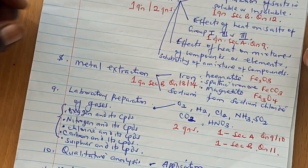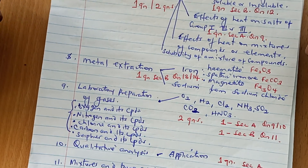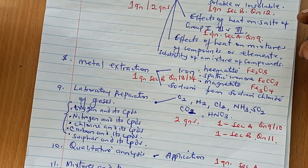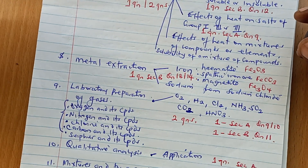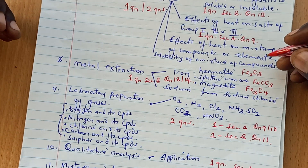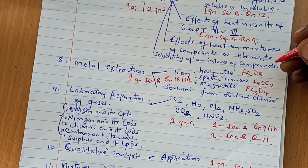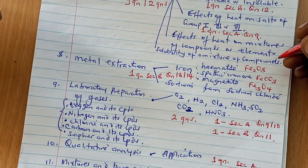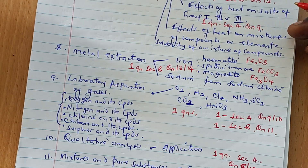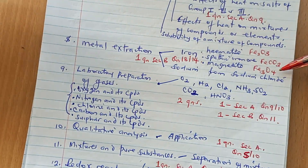The eighth topic is metal extraction. There is only one question and in most cases it is brought in section B. You need to know the extraction of two metals — extraction of iron from hematite (iron 3-oxide), siderite (iron 2-carbonate), or magnetite (iron tetraoxide), as well as extraction of sodium from sodium chloride. In section B, that is question number 13 or 14.